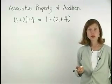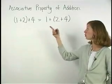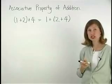The associative property of addition tells us that when we're adding more than two numbers, the grouping of addends does not change the sum.